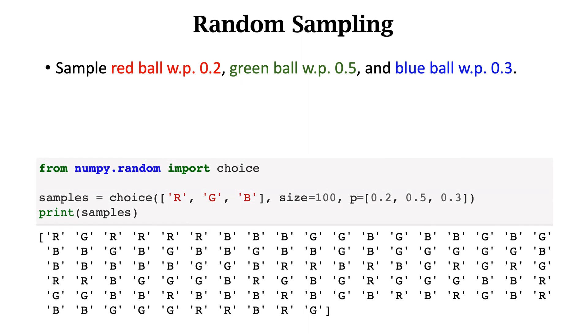Let's implement the random sampling using Python. The color can be red, green, and blue. They are sampled with probabilities of 0.2, 0.5, and 0.3, respectively. I want to draw 100 samples. The choice function returns me 100 samples.